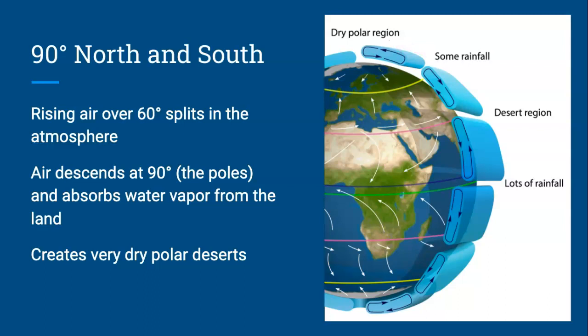The air that travels towards the poles cools in the atmosphere until it reaches the north or south pole, and then it starts to descend or travel down. And again, as the air warms, it absorbs water vapor. So the descending air basically dries out the north and south pole. And then that air travels back towards 60 degrees north or south.